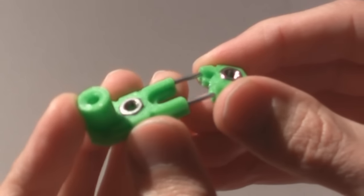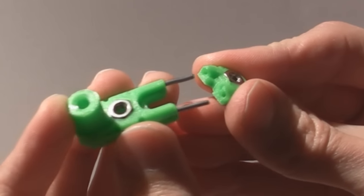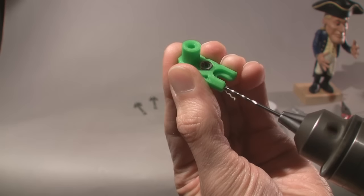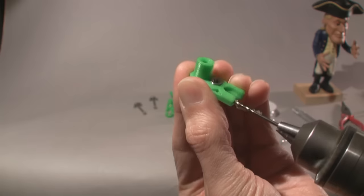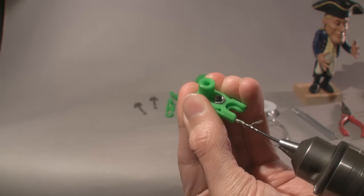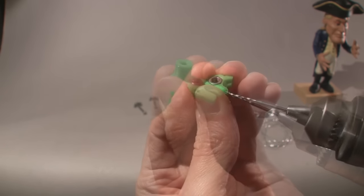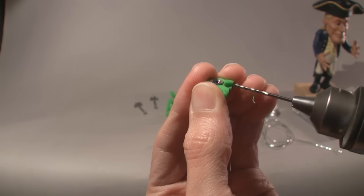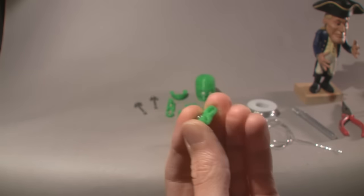So for the toes, again, you want to make sure that you drill out the holes, which are 1/16 inch in diameter. Make sure you drill them out, but don't drill them too far. And go very slowly. Again, can't really stress that enough.